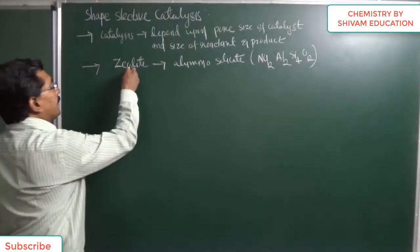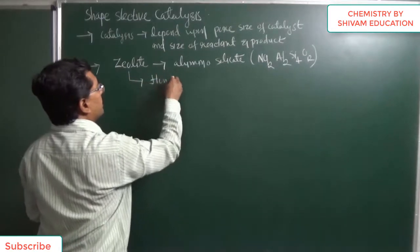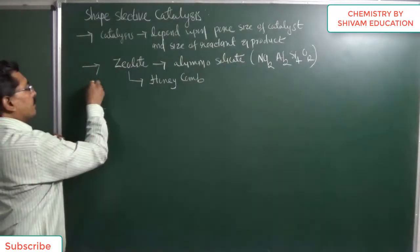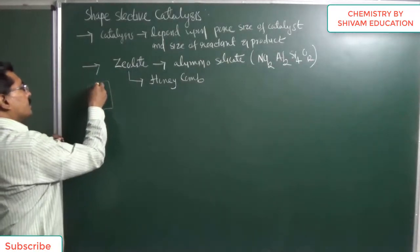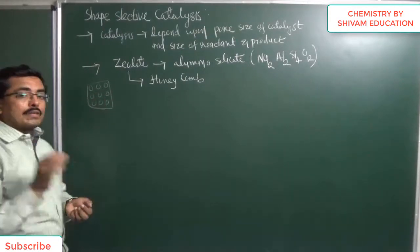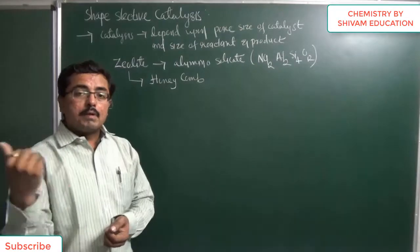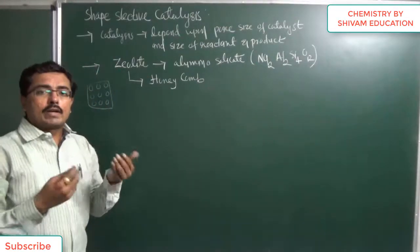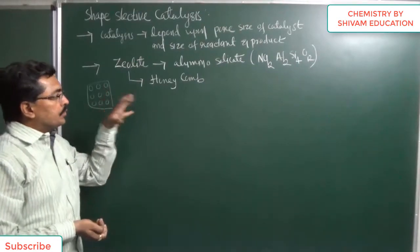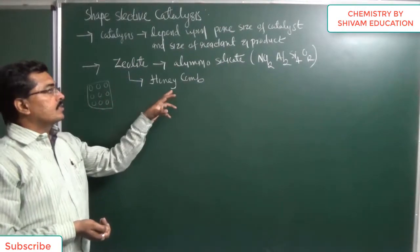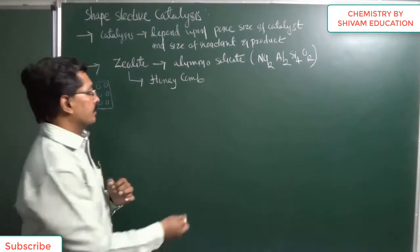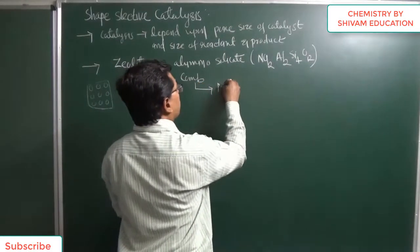Zeolite has a honeycomb-type three-dimensional network structure. You may have seen this type of honeycomb. In a three-dimensional honeycomb structure there are tiny pores — things cannot easily enter or pass inside. Zeolite has a similar three-dimensional network structure like a honeycomb, with tiny pores.